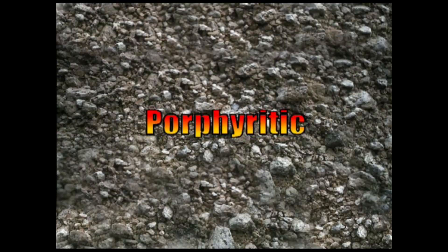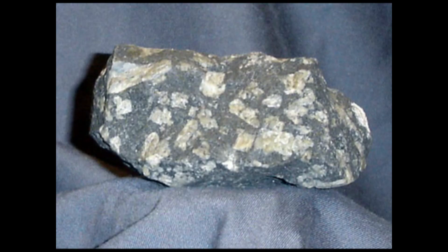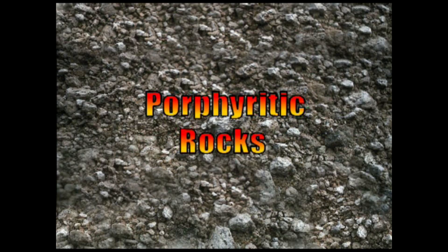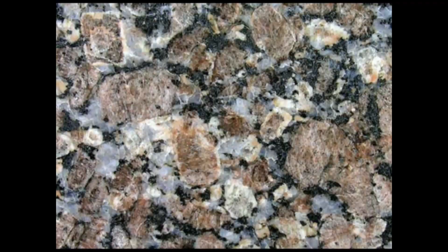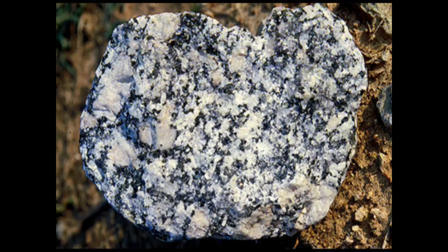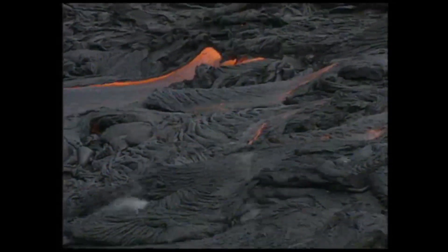Second is porphyritic texture. When two size populations of crystals are present in any rock — large crystals enclosed by smaller ones — the texture is known as porphyritic. Porphyritic rocks are composed of at least two minerals having a conspicuous difference in grain size. The larger grains are termed phenocrysts and the finer grains are either the matrix or groundmass. Porphyritic rocks have undergone two stages of cooling: one at depth where the larger phenocrysts form, and a second at or near the surface where the matrix grains crystallized.